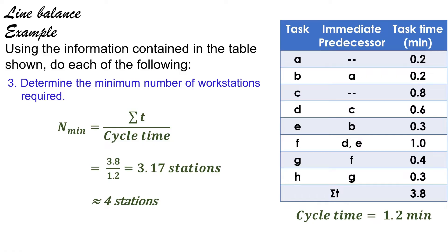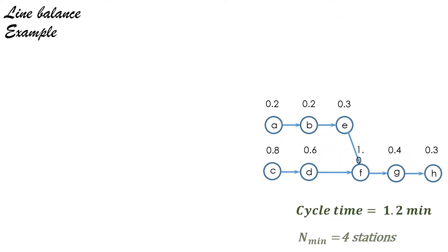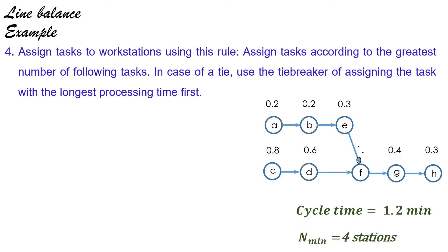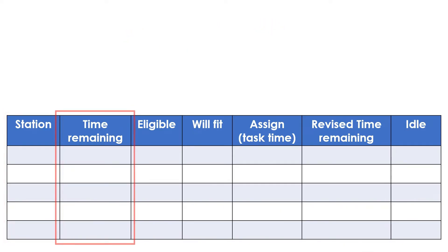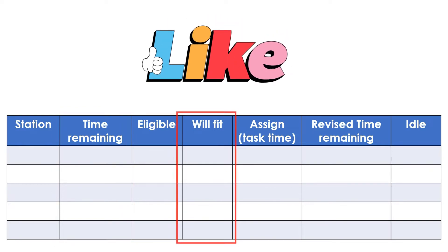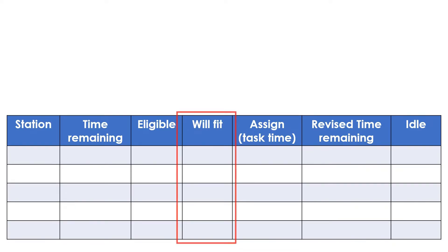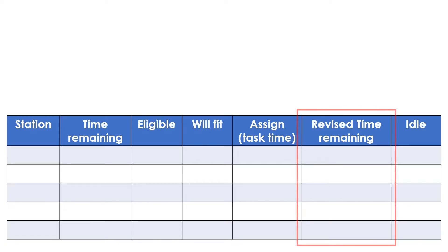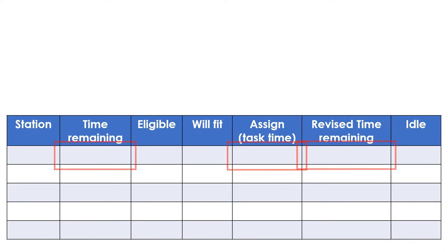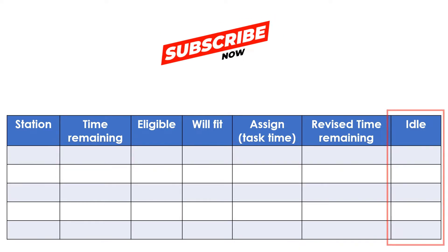Because 3.17 stations are not feasible, it is necessary to round up to 4 stations because 3.17 is the minimum. After having the precedence diagram, the cycle time, and the minimum number of required workstations, we can now assign tasks to workstations. The rule is to start with a task having the greatest number of following tasks. To do this systematically, I will use a table. The columns include: workstation numbers, remaining time, eligible tasks, tasks that will fit, the assigned task with its duration, the revised remaining time, and the idle time — which occurs when no eligible task can fit in the workstation's remaining time.